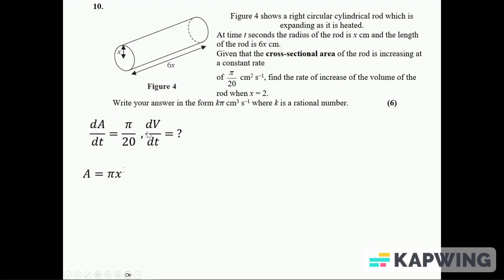I know that the area of the end there, the cross-section, is π r squared, so that's just π x squared. And the volume, well it's just that area multiplied by the length which is 6x, so it's 6π x cubed.